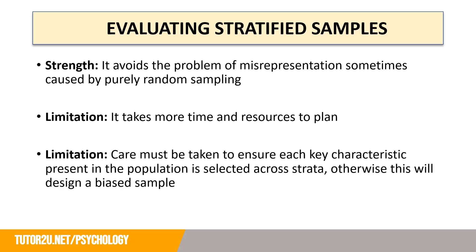When evaluating stratified sampling, these questions are quite common in exam papers — you may be asked to identify the sampling technique used and then identify a strength or limitation. A strength is that it avoids the problem of misrepresentation sometimes caused by purely random sampling. However, it takes more time and resources to plan, and care must be taken to ensure that each key characteristic present in the population is selected across strata — otherwise this will produce a biased sample.